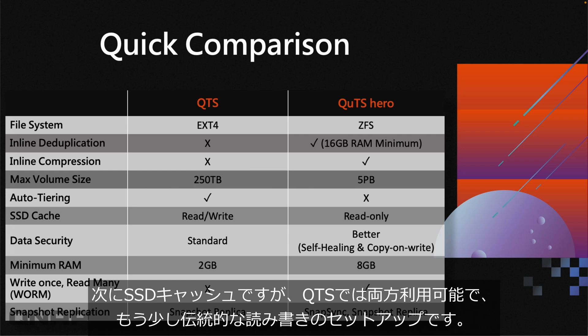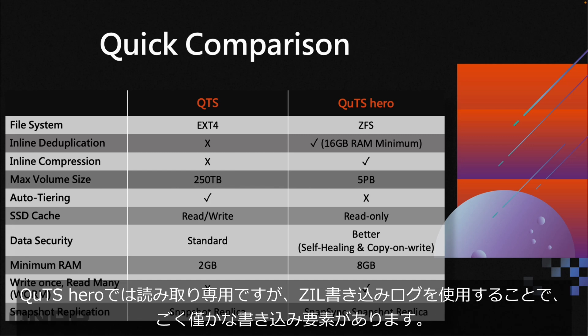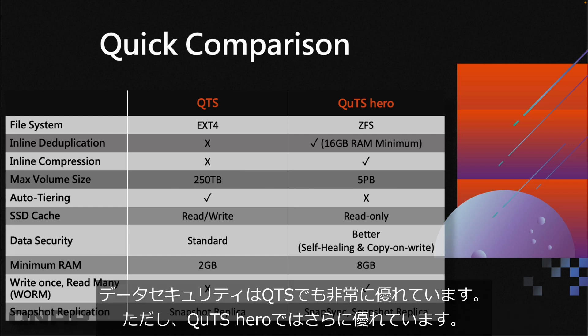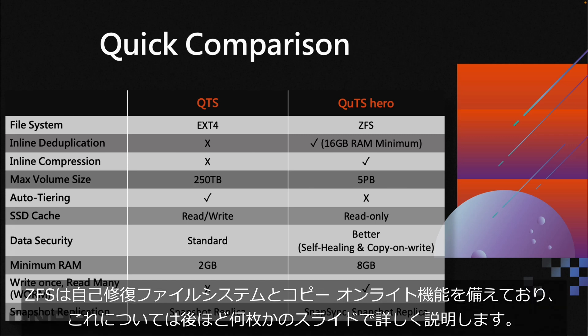SSD cache is available on both operating systems. On QTS it's a more traditional read and write setup, accelerating data both ways. On QUTS Hero it's read-only, with a small write element via a ZIL write log, but essentially it functions as a read-only cache. Data security is good on QTS, but better on QUTS Hero — ZFS brings a self-healing file system as well as copy-on-write.